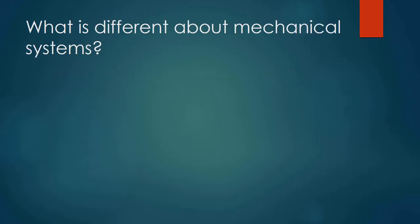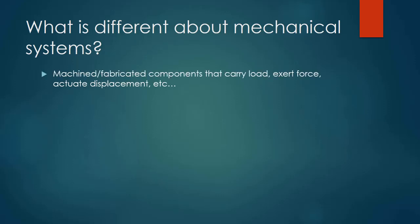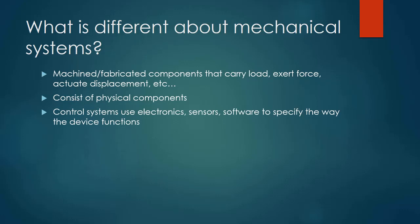So what is different about mechanical systems? We have machined or fabricated components that carry load. They exert forces, they respond to forces, they actuate displacement. We're talking about mechanisms that interact with the world around them. And because of that, there's the transmission of forces through those mechanisms, and because of the application of those forces, those mechanisms will deflect — and we need to concern ourselves with when do they actually fail. They consist of physical components that we can touch; they are not software things, not in the virtual environment. They use control systems, so as mechanical engineers we integrate sensors and software to control the functioning of our machines.